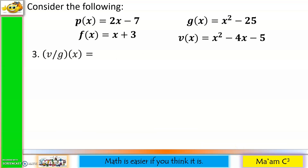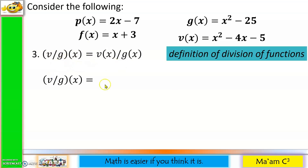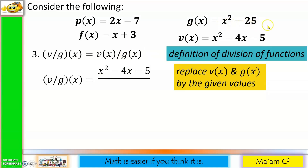Next example: (v ÷ g)(x). The first step is the definition of division, so this becomes v(x) divided by g(x). We replace v(x) and g(x) by the given values: v(x) is x² − 4x − 5, divided by g(x) which is x² − 25.